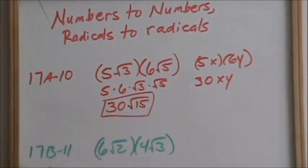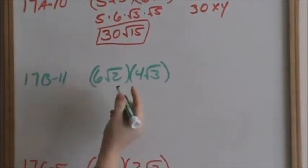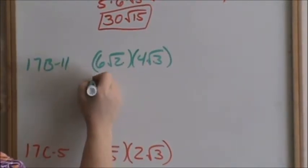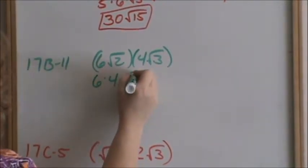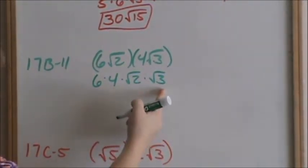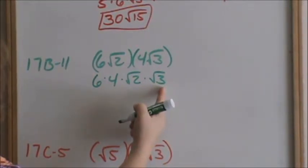Okay, now on to problem 17b, number 11. Again, if you want to rearrange it to put your numbers together and then put your radicals together to help you visually, then you can do that. This is the same thing because multiplication is commutative.